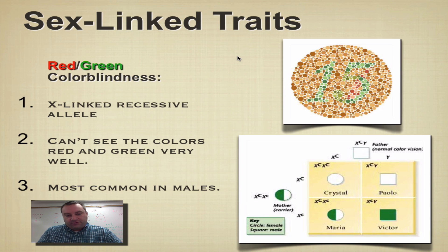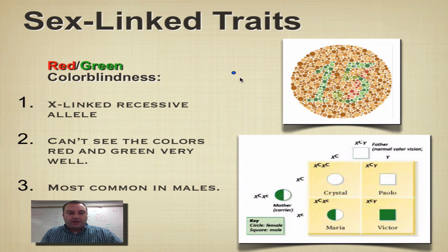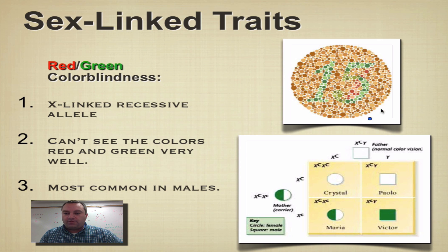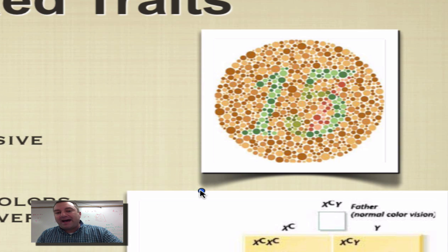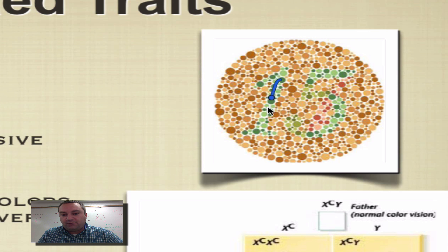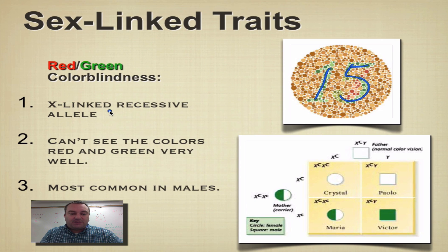Our first trait is red-green colorblindness. With red-green colorblindness, you can't see the colors red or green very well. This is a test plate used to see if people can see reds and greens. If you can see the green 15 in this circle, you are not red-green colorblind. If all of these circles look the same color to you, then you have red-green colorblindness. This is X-linked recessive.